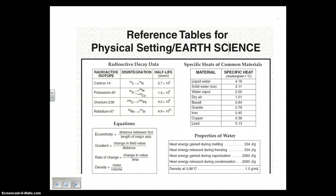So how do you calculate gradient? Well, on the front of a reference table there, there's the equations in the bottom left corner. And if you take a look at this area here, you're going to see gradient. Gradient is the change in field value over distance. Change in field value is usually going to be elevation divided by the distance.